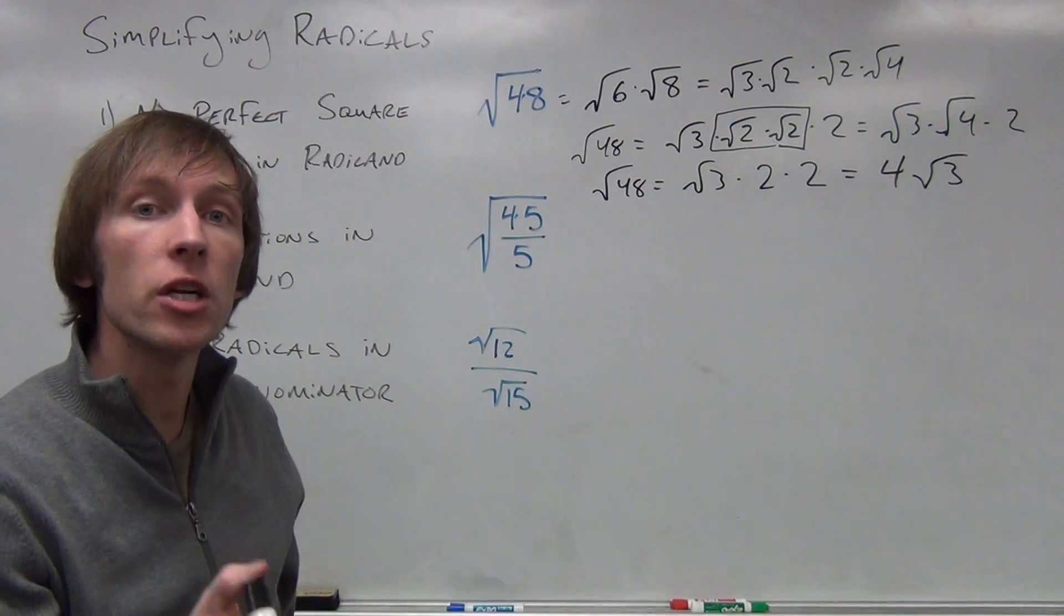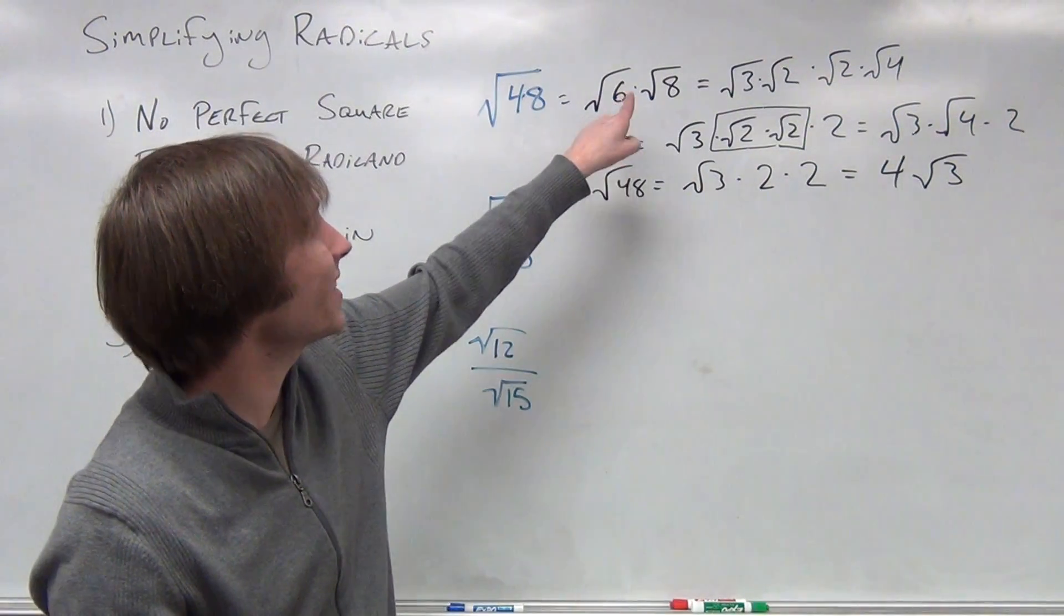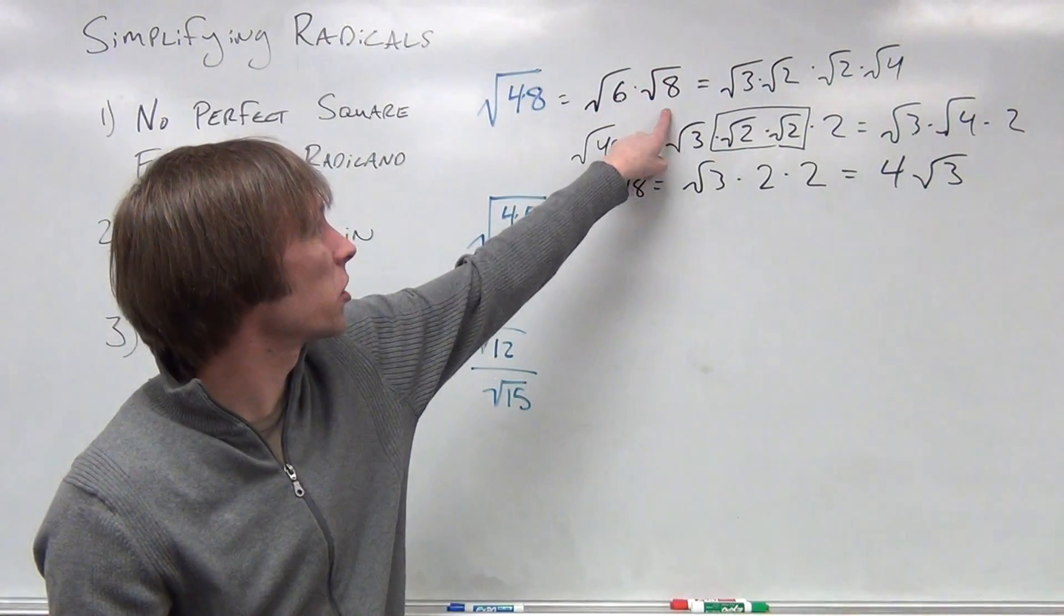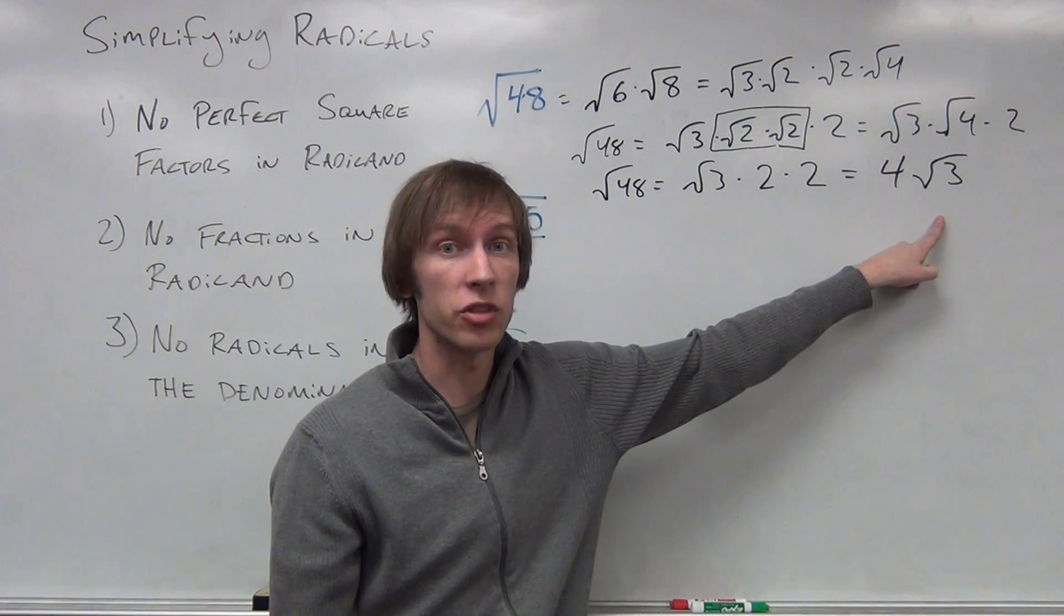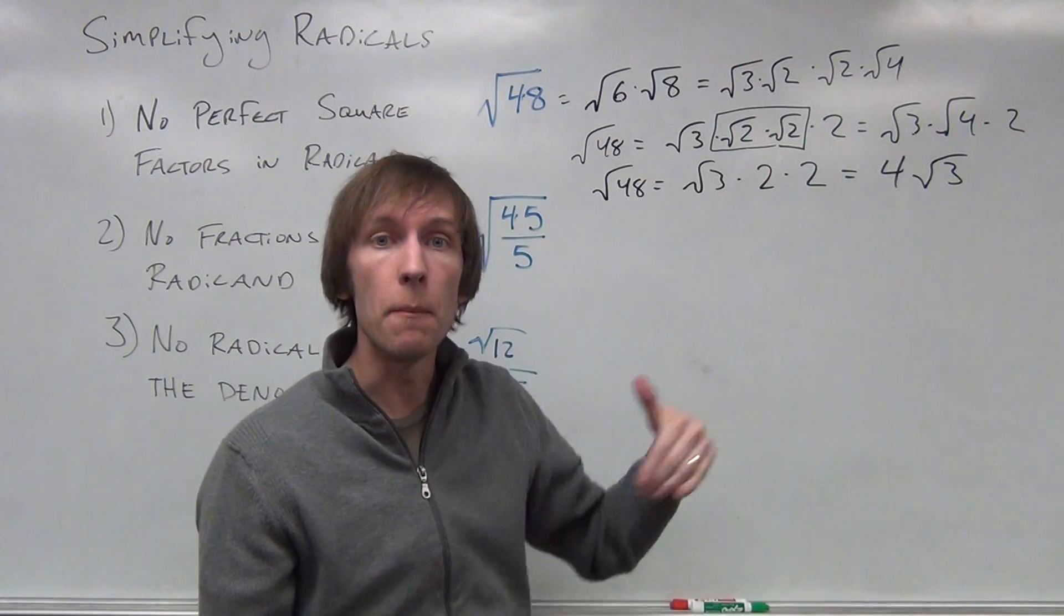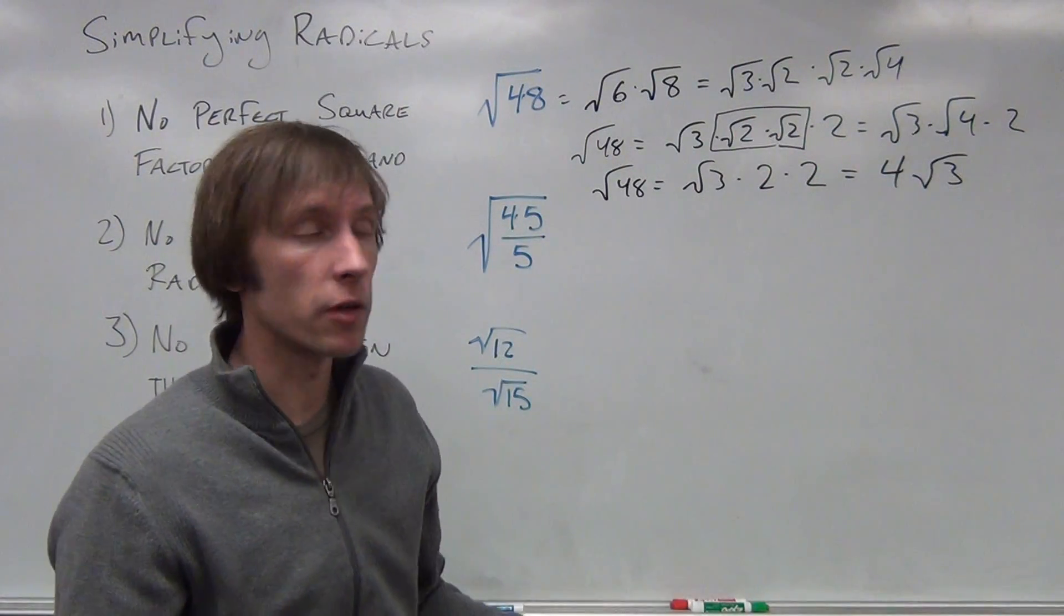Now the more efficient process for doing this would be to say, what if I made this the square root of 16 times the square root of 3? The square root of 16 times the square root of 3, that would save us a whole lot of work. Be efficient. Know the multiples of your perfect squares.